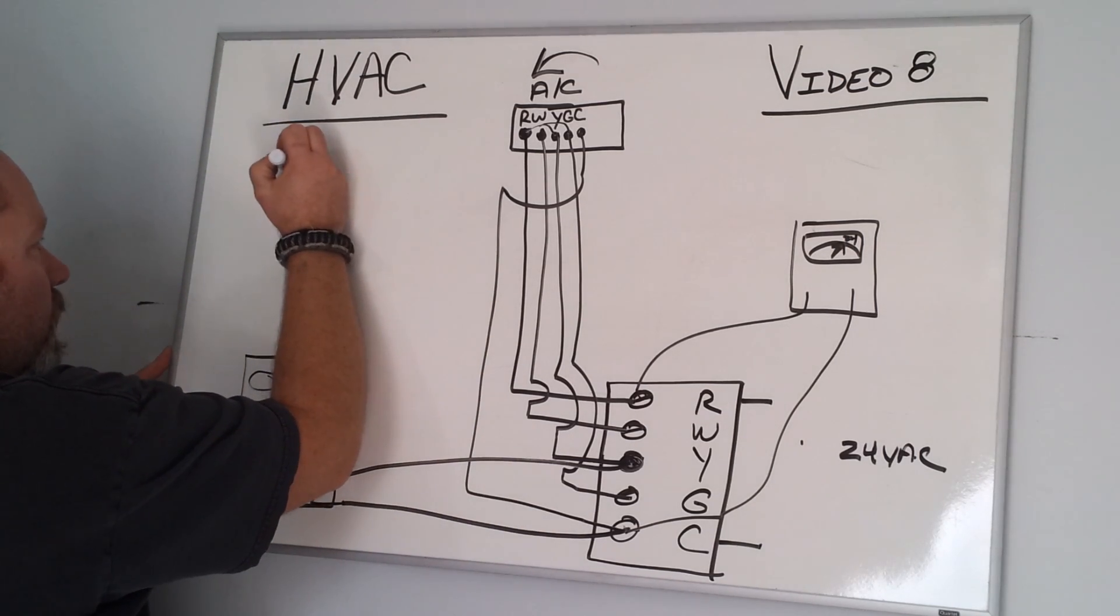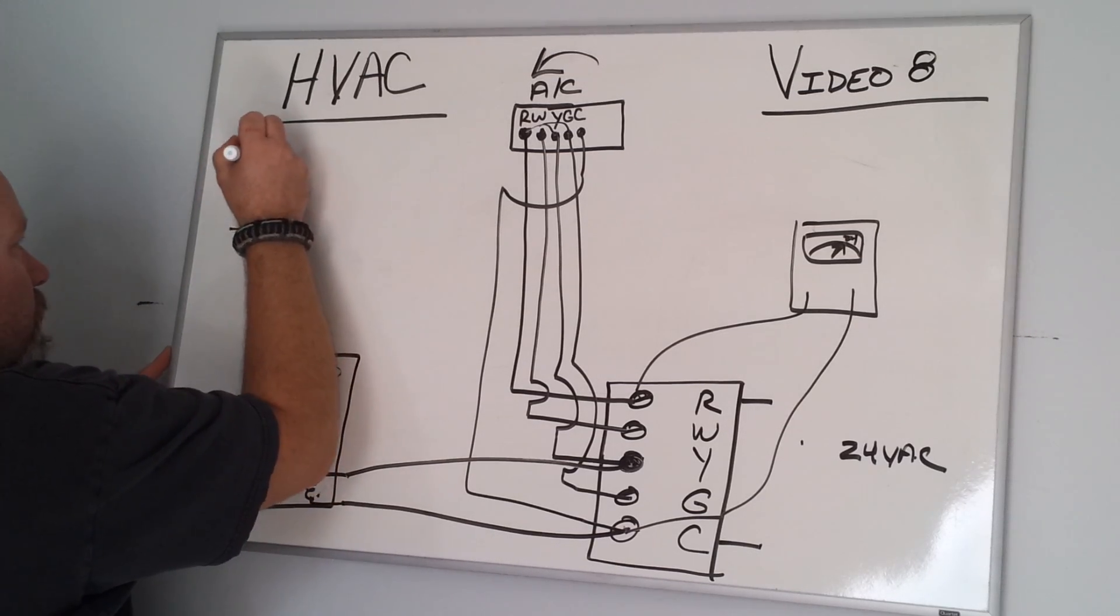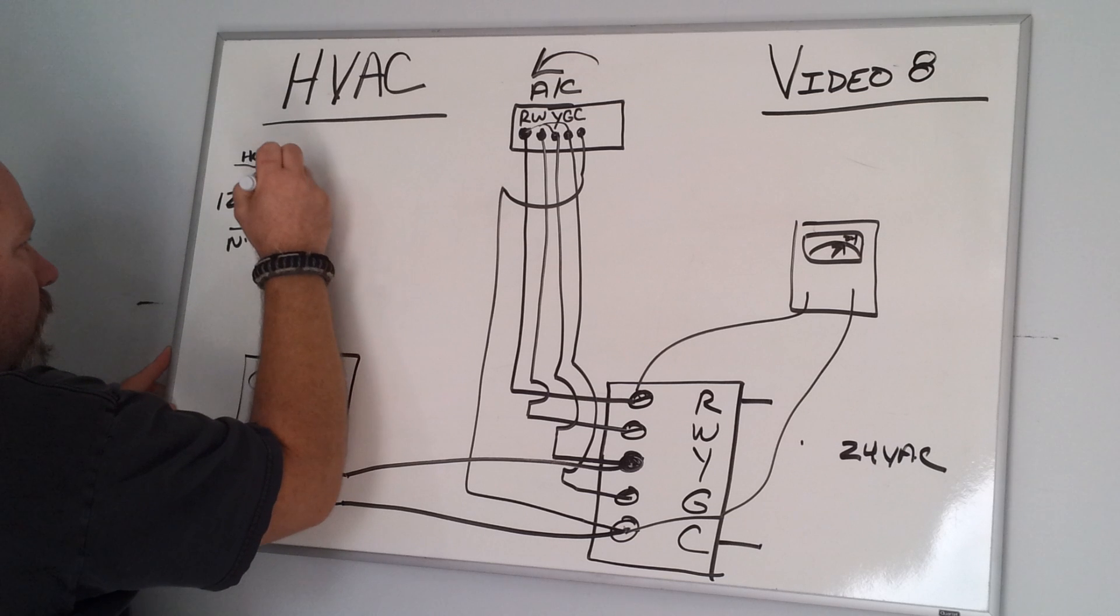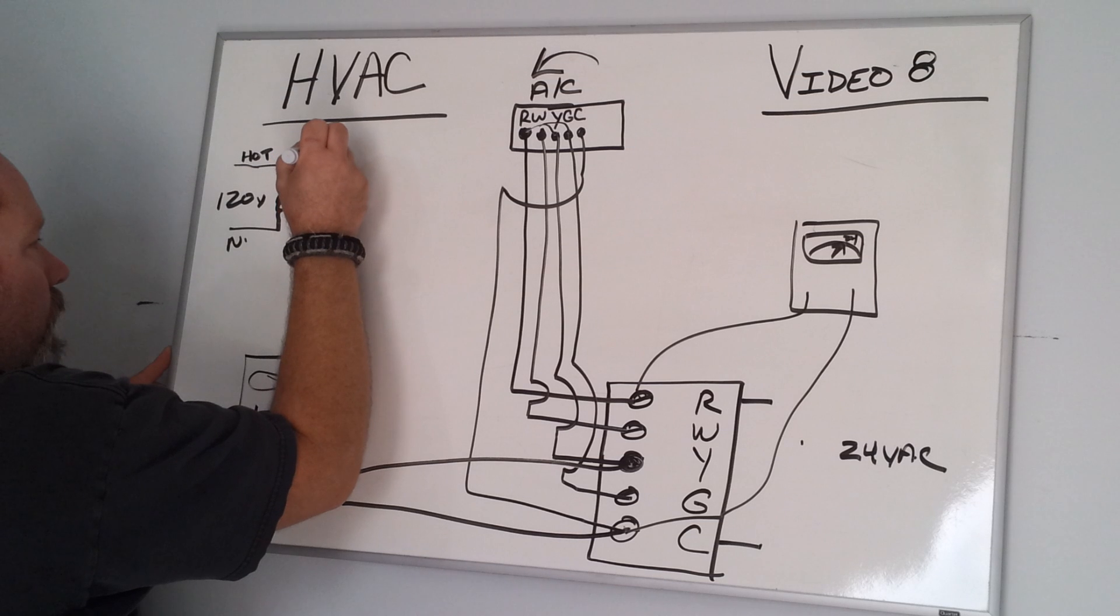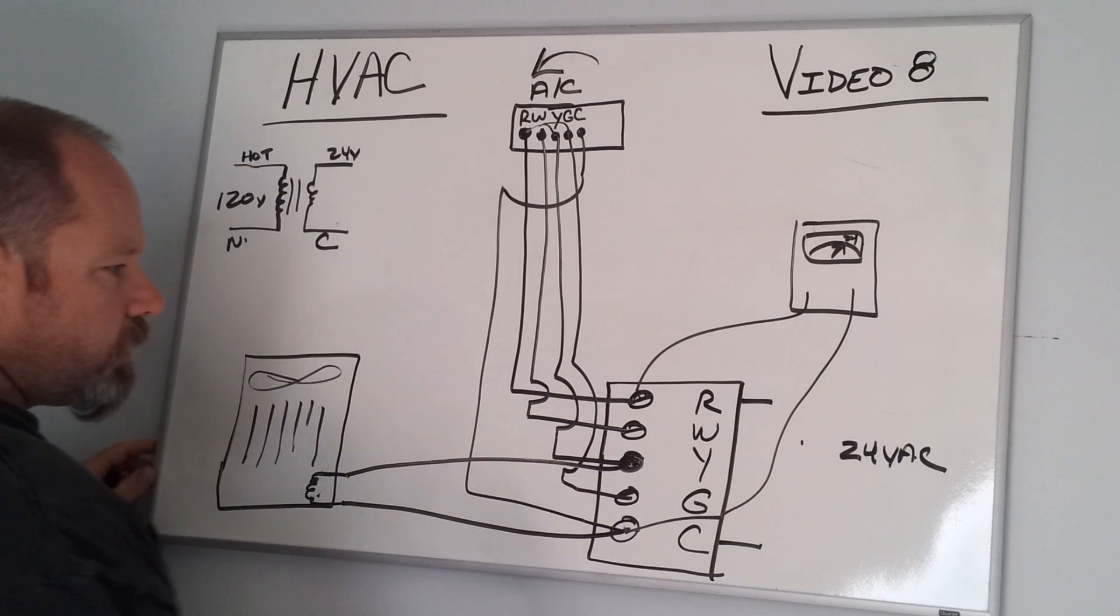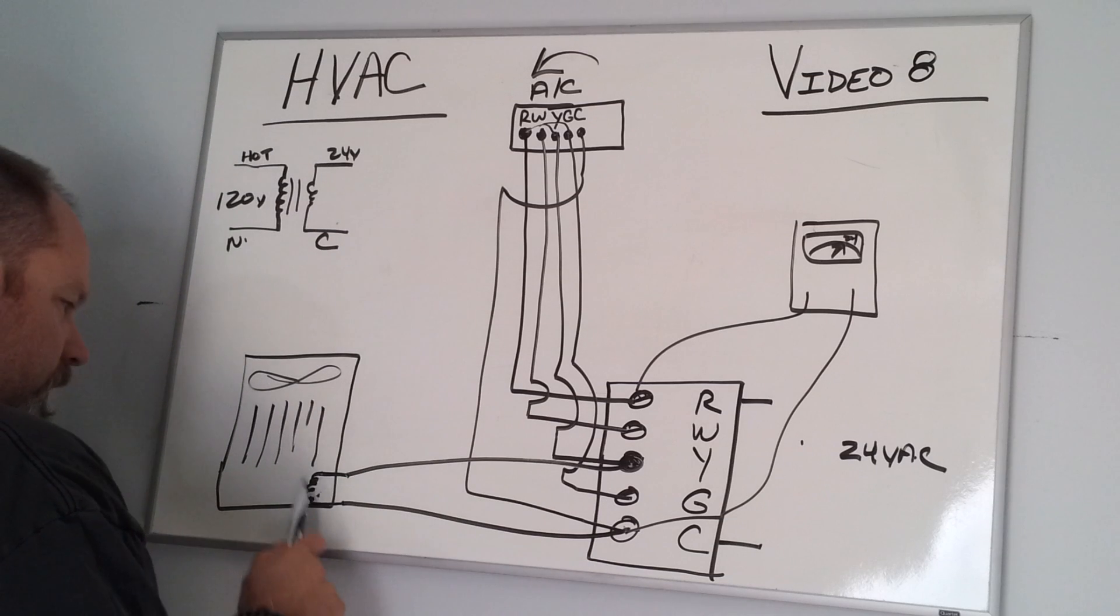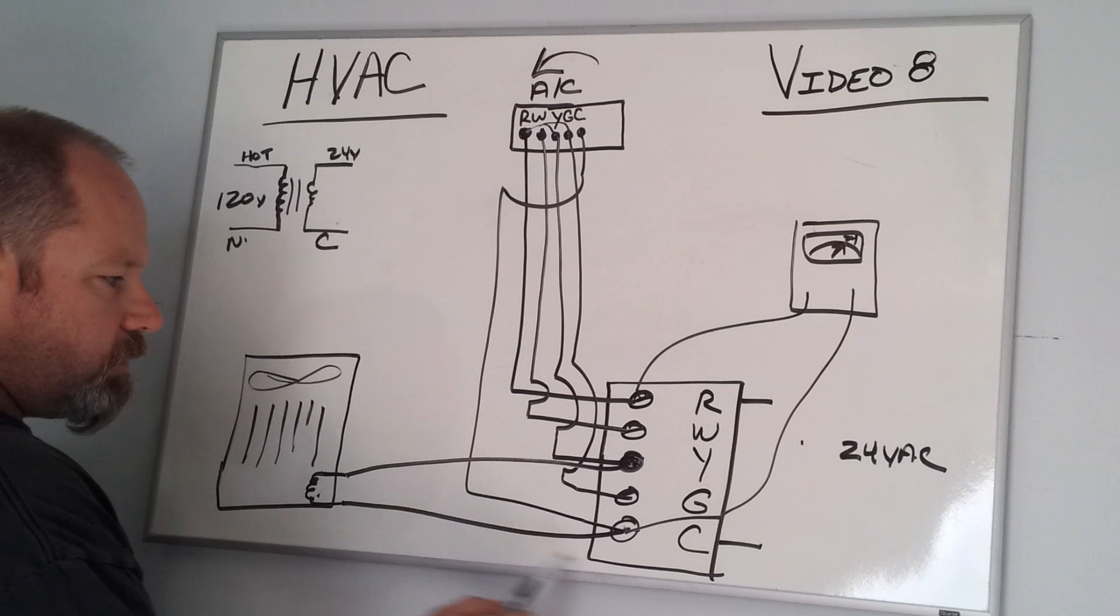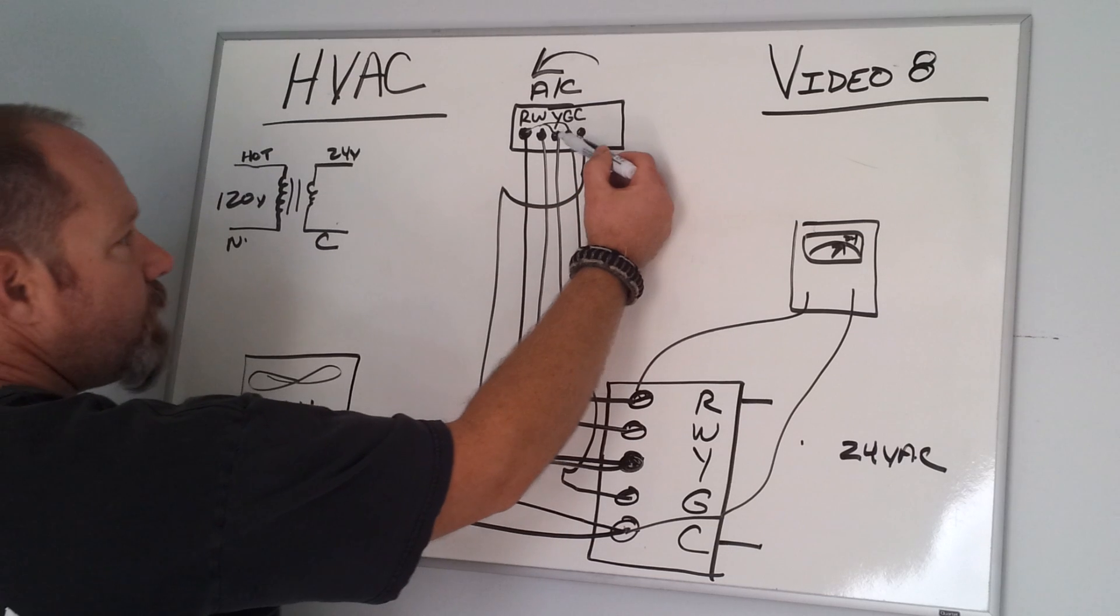If you remember one of my other videos, a transformer has your hot and neutral on your 120-volt circuit, and on your secondary side you have 24 volts and common. So there's your 24 volts and your common. It energizes the coil, initiates this through a contactor in the unit, and comes back to C and completes the circuit.